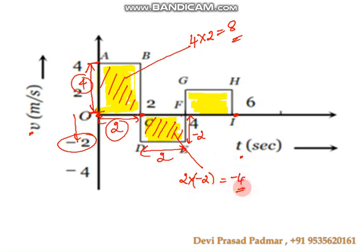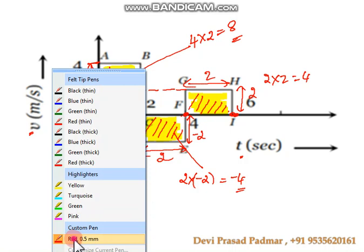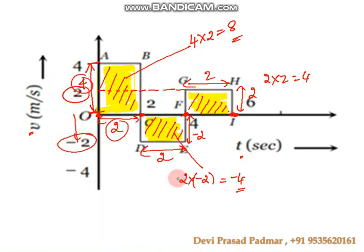For the third shape from 4 to 6 seconds: the length is 2 and the breadth is 2 — it is actually a square. So the area is 2 into 2, which equals 4. Now we have the values for all three areas: first is 8, second is minus 4, and third is 4.